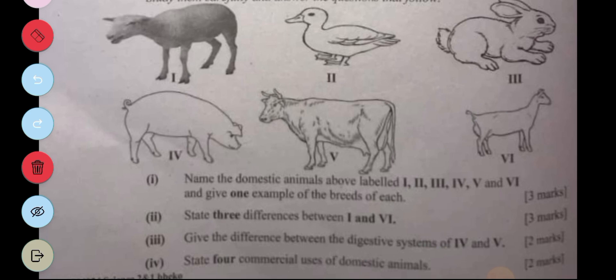Part two: State three differences between one and six, between a goat and a sheep. With goats, one, they are thinner. They have thinner bodies and thinner legs. Sheep do not have thin legs and bodies; they are actually broad.